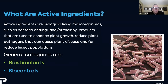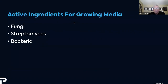What are active ingredients? Active ingredients are biological living microorganisms — most of us know them as bacteria or fungi, or their byproducts. They're used to enhance plant growth, reduce pathogens, and help reduce insect populations. The two general categories we'll touch on today are biostimulants and biocontrols. For growing media, there are three different types: fungi, streptomyces, and bacteria.